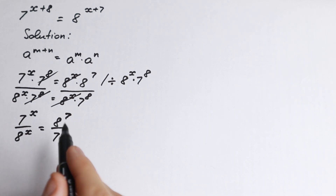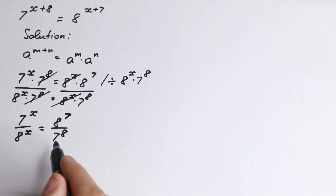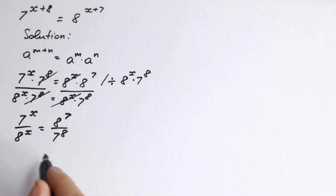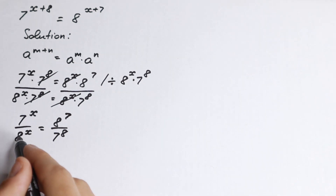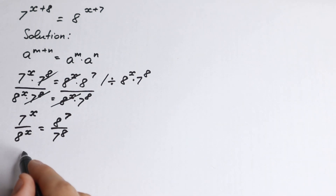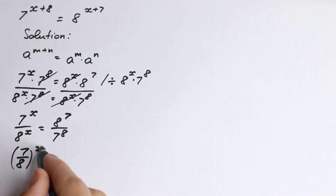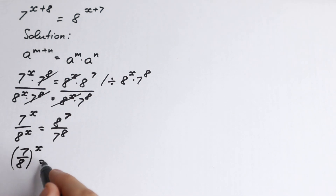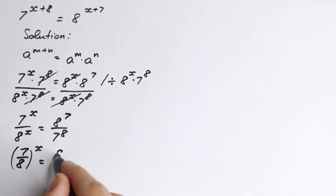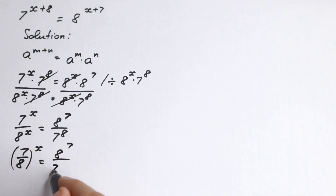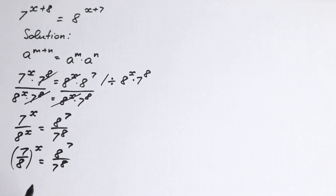Next, we need to know one more good rule: if we have different bases but the same power, we can combine them. So we write 7 over 8, all raised to the power x, equal to 8 to the power 7 over 7 to the 8th power.